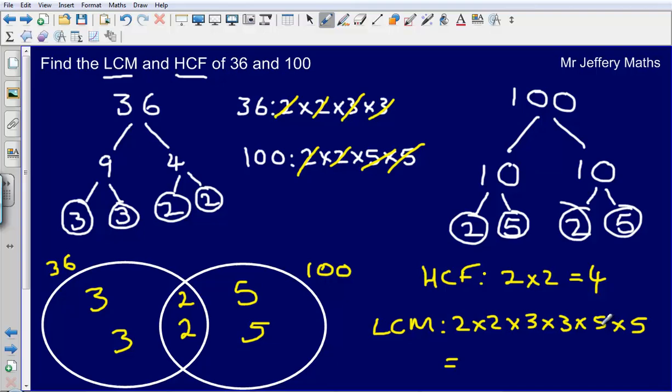So 5 times 5 gives me 25, 25 times 3 gives me 75, times 3 again gives me 225, times 2 gives me 450, times 2 gives me 900. So my lowest common multiple here would be 900.